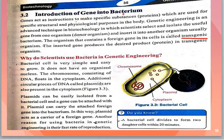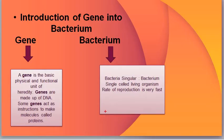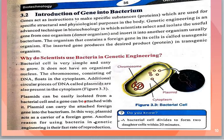Next: why do scientists use bacteria in genetic engineering? Referring back to our previous point, the rate of reproduction is very fast. Bacteria are very simple and easy to grow. They do not have an organized nucleus.